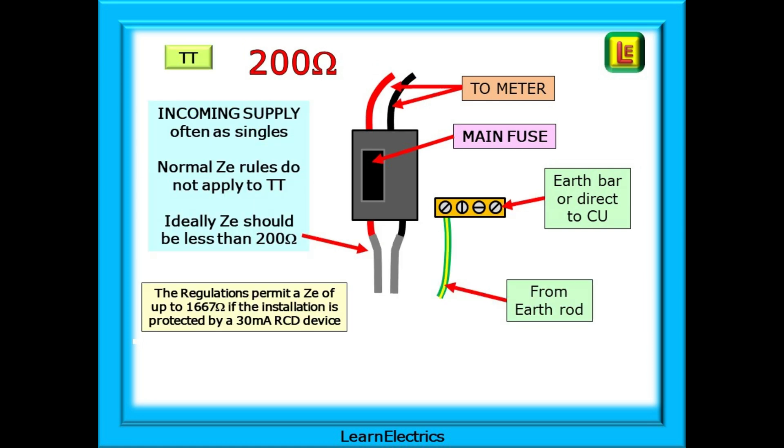Do not confuse TT systems with TNS types. A TT system has no earth going to or coming from the cutout box. Learn to recognise this system. There is a phase conductor to and from the cutout and a neutral conductor to and from the cutout and that is it. The earth conductor is separate and comes from the earth rod. It may go to an earth bar or it may go directly into the consumer unit.